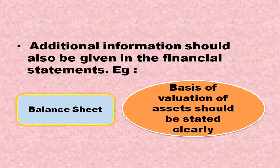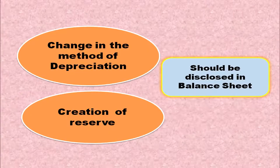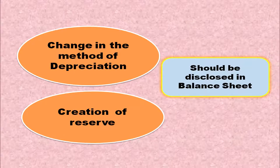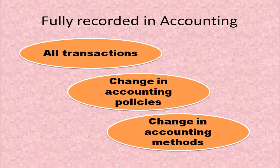Whatever details are available must be honestly provided in the accounts. Additional information should also be given in the financial statements. The basis of valuation of assets should be stated clearly in the balance sheet. Any change in the method of depreciation and any reserve created should be disclosed in the trial balance or balance sheet. All transactions, changes in accounting policies, and changes in accounting methods should be disclosed.